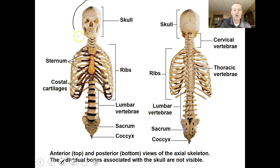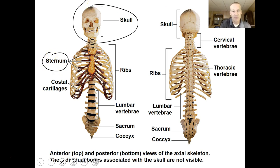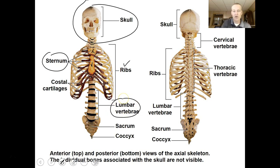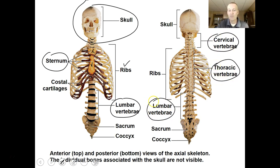We've talked about the skull and facial bones. This is the sternum — made of three parts: the manubrium, the body, and the xiphoid process. We also have 24 ribs, so you have 12 ribs on each side. You can see the vertebrae here: seven cervical vertebrae, 12 thoracic vertebrae, and five lumbar vertebrae. Then five fused vertebrae form your sacrum, and below that is the tailbone or coccyx.